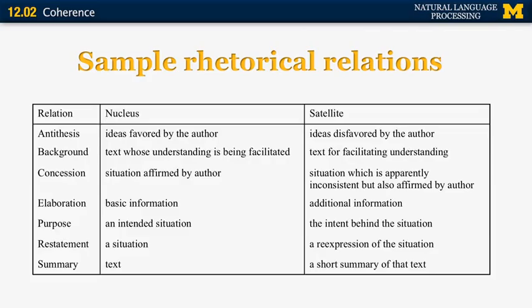Here's a larger table with examples. Let's start with antithesis. The nucleus of an antithesis relation is the ideas favored by the author, and the satellite is the ideas disfavored by the author. For example, the author may say: 'I like dogs, but I hate chihuahuas.' The second clause is the satellite — something that is disfavored — and the first is the nucleus, the ideas favored by the author.